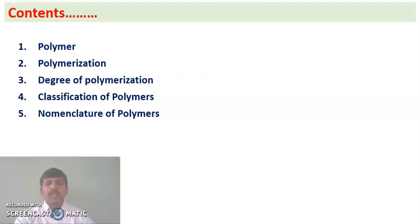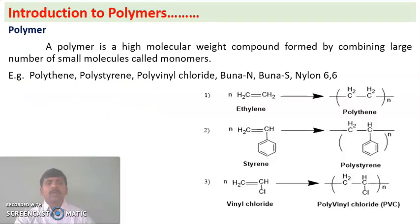Polymers are high molecular weight compounds which are formed by combining a large number of small molecules called monomers. Small molecules, after combining, give rise to a high molecular weight compound that is called a polymer. Examples of polymers are polythene, polystyrene, polyvinyl chloride, Buna-N rubber, Buna-S rubber, and nylon 6,6.